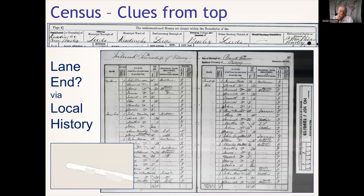Reminder: check the top of your censuses, as these give you clues. Township records - where are they? We've got municipal boroughs, parliamentary boroughs, urban sanitary districts, and of course the church. This place is described as 'Lane End' - if you tried to find that today people wouldn't know where it is, but your local history of the place will enlighten you.